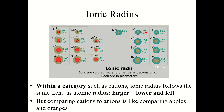Within a category such as cations, the ionic radius follows the same trend — larger ions are lower and to the left. However, comparing cations to anions is difficult; it's like comparing apples and oranges. The only time you can compare cations and anions is when dealing with an isoelectronic set of ions, meaning they have the same number of electrons.